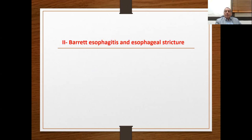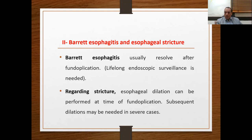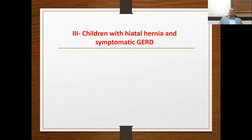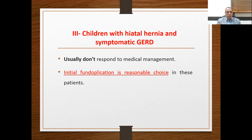The second indication for initial fundoplication without medical therapy trial is Barrett's esophagitis and esophageal strictures — Barrett's usually resolves after fundoplication, but lifelong endoscopic follow-up is needed. Regarding strictures, esophageal dilatations should be performed with fundoplication, as the child may need subsequent dilations in severe cases. The third indication is children with hiatal hernia, who need initial fundoplication as they usually don't respond to medical treatment. So the three situations for initial fundoplication are: selected situations, Barrett's esophagitis/esophageal strictures, and hiatal hernia.